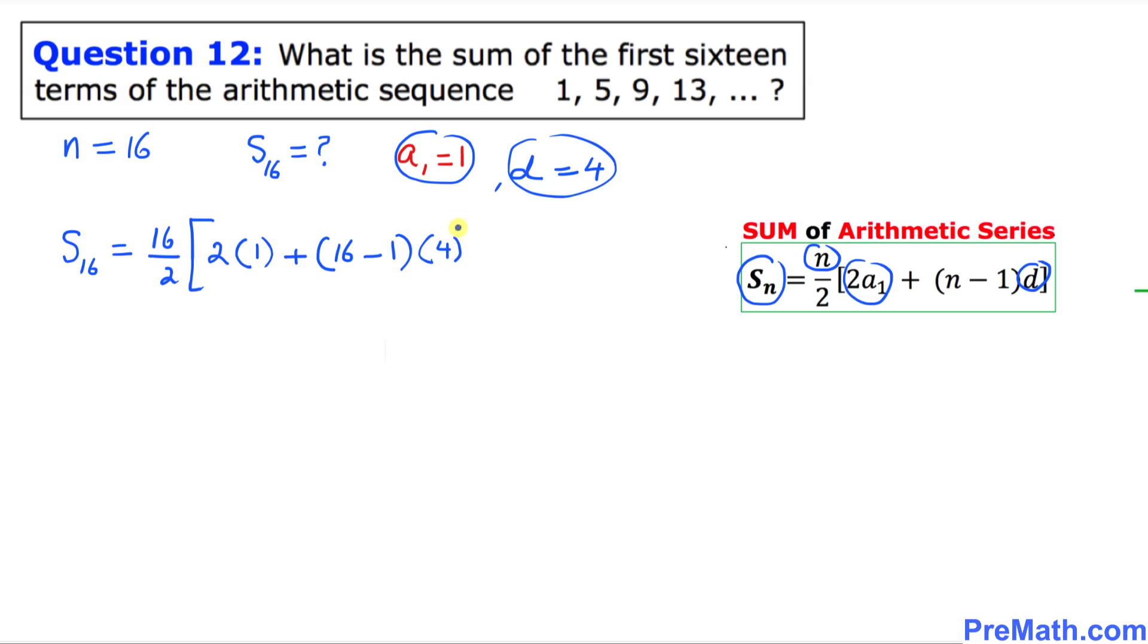Let's simplify now. So this s of 16 is going to be, first of all, 16 divided by 2 is 8. And in this bracket, 2 times 1 is 2 plus 16 take away 1 is 15 times 4. Let's simplify this thing.